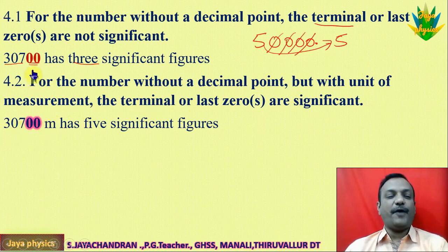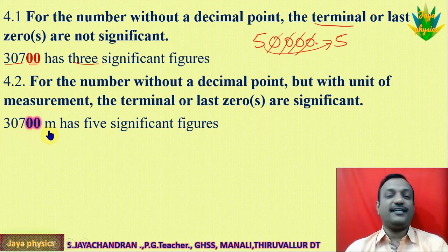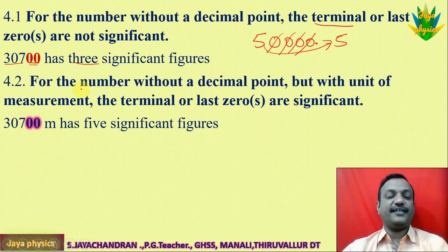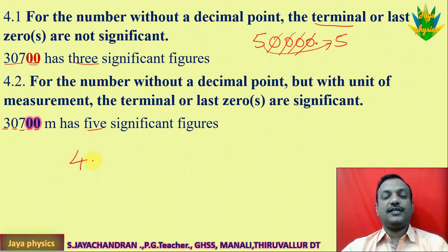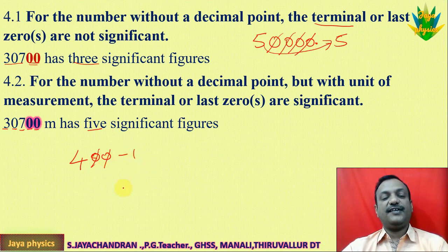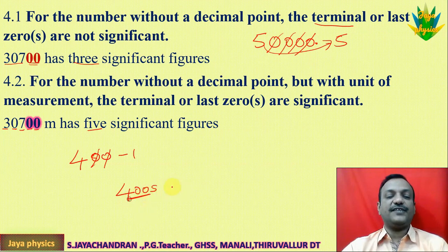Suppose you find a number with units. For example, 30,700 meters — the trailing zeros are meaningful when you have a defined unit, so you consider them significant. Every figure is significant. For example, if 480 seconds is a measured value, the significant figure is 3 because the trailing zero is meaningful in that context.